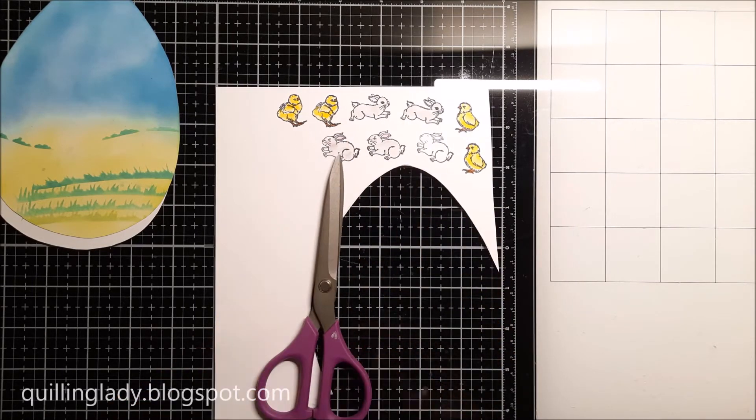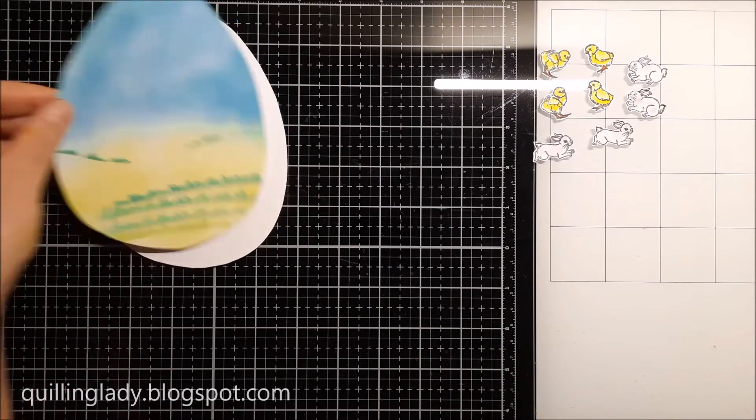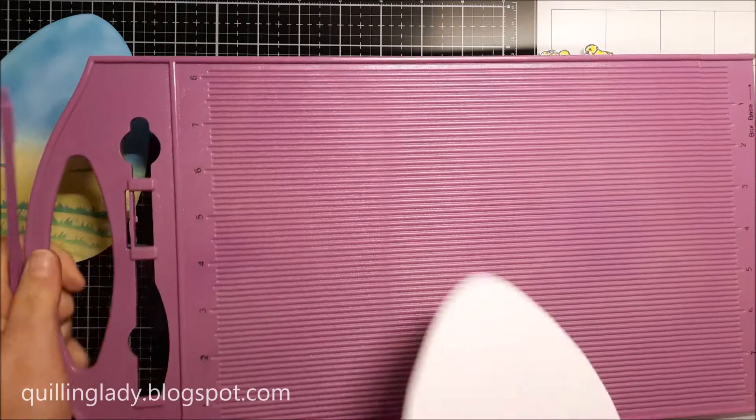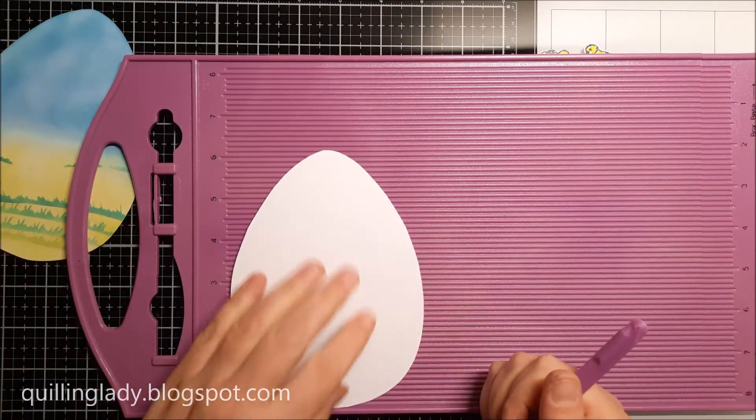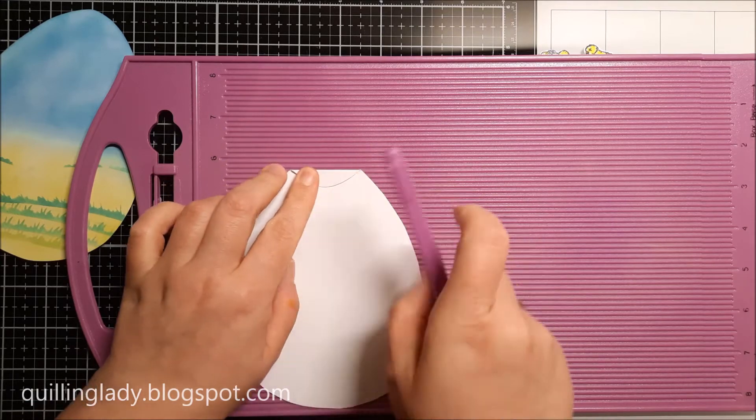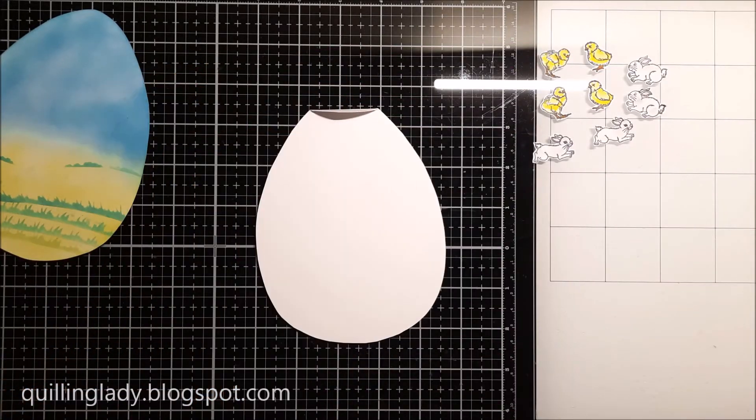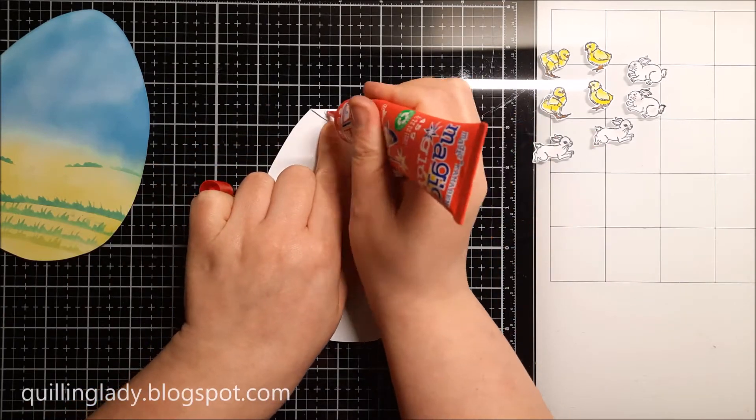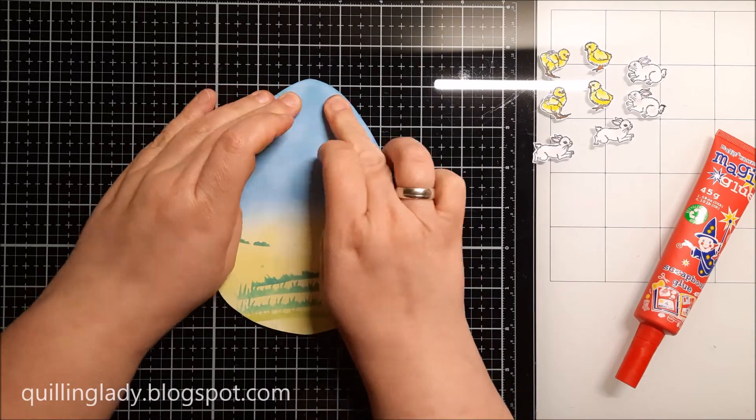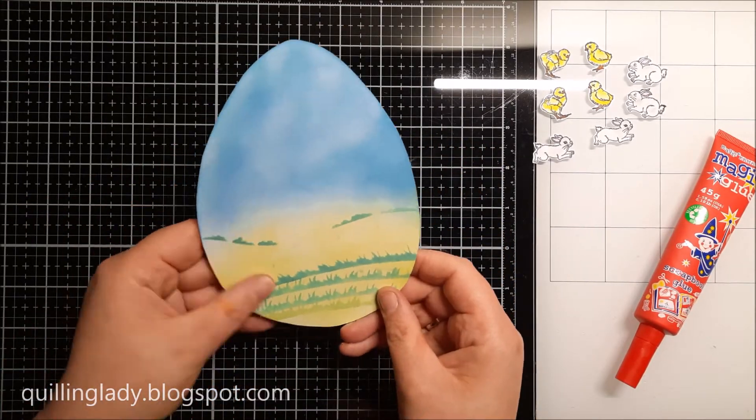Now before we start decorating, we have to create a flap on the back panel. To do it, I'm using my scoreboard and scoring tool. I'm going to burnish that flap, and using my one and only liquid glue Magic Glue, I'm going to put the back and the front of the card together, super quick and easy. As usual, I open the card and I burnish that as well.